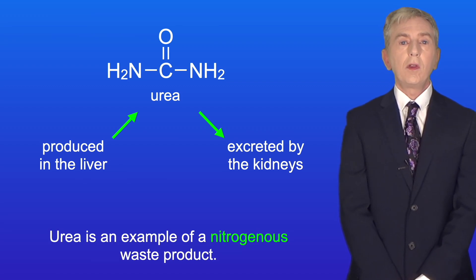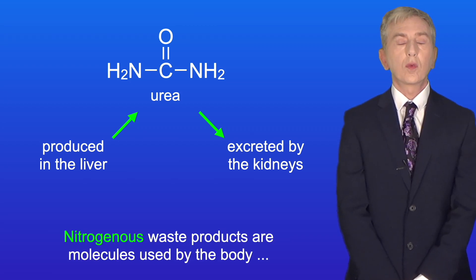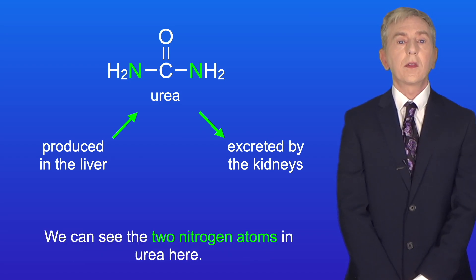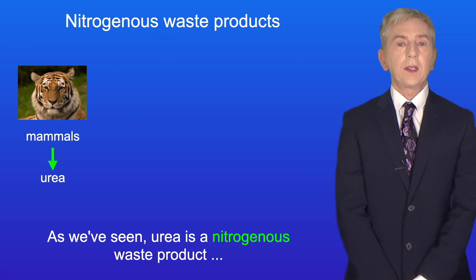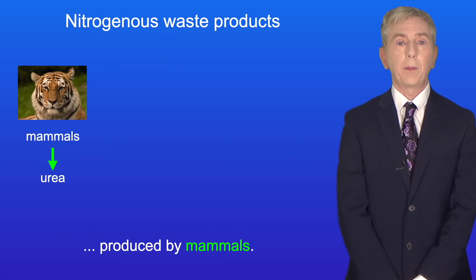Urea is an example of a nitrogenous waste product. Nitrogenous waste products are molecules used by the body to eliminate excess nitrogen. We can see the two nitrogen atoms in urea here. So urea is a nitrogenous waste product produced by mammals.